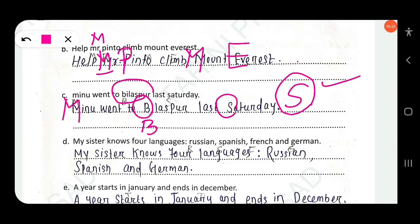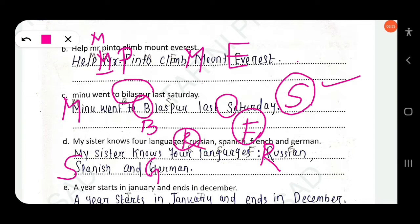Next: 'My sister knows four languages — Russian, Spanish, French, and German.' Russian, Spanish, French, and German are names of particular languages, so the first letters must be capitalized: R for Russian, S for Spanish, F for French, and G for German.